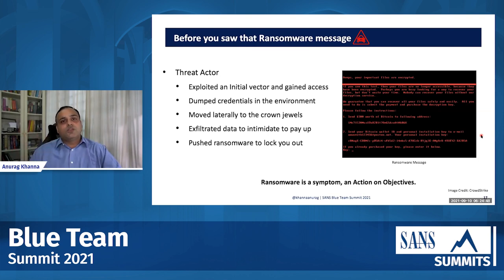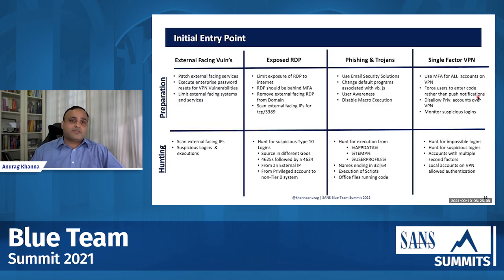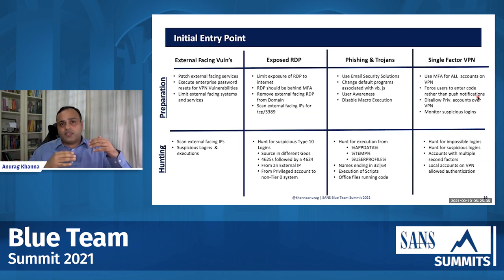We are going to go through each of these steps — what threat actors do when ransomware attacks happen — and see what we as defenders can do to make their life difficult and disrupt their activity. Let's start with the first step: initial compromise. There are a number of ways attackers can get initial compromise. Four ways which are probably the most common in my experience: external facing vulnerabilities, exposed RDP, phishing and trojans, and single-factor VPN.